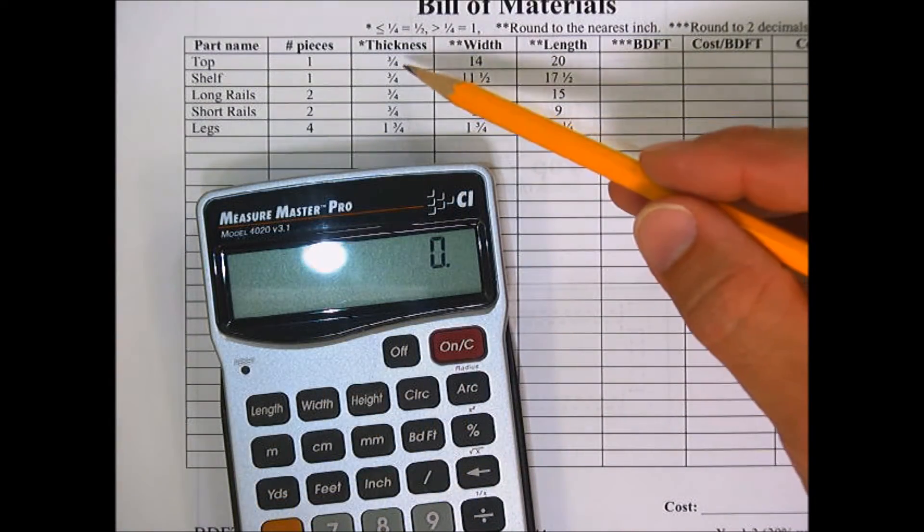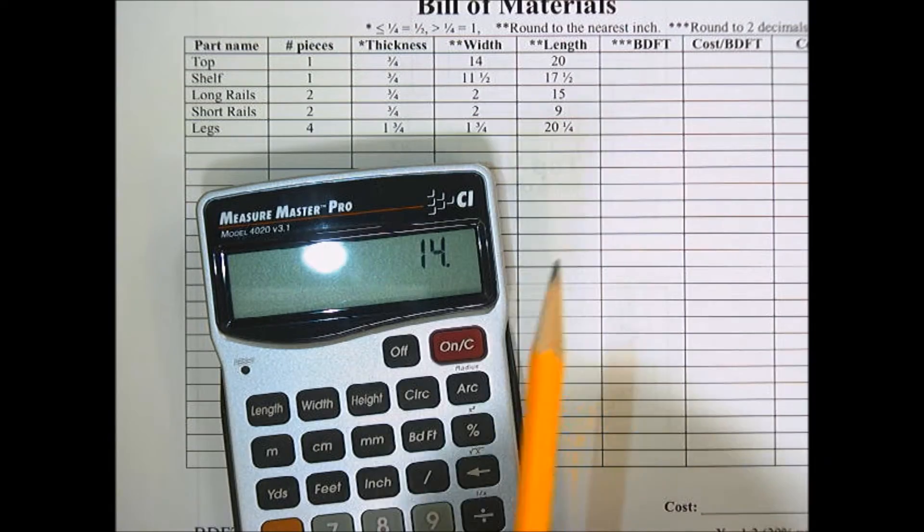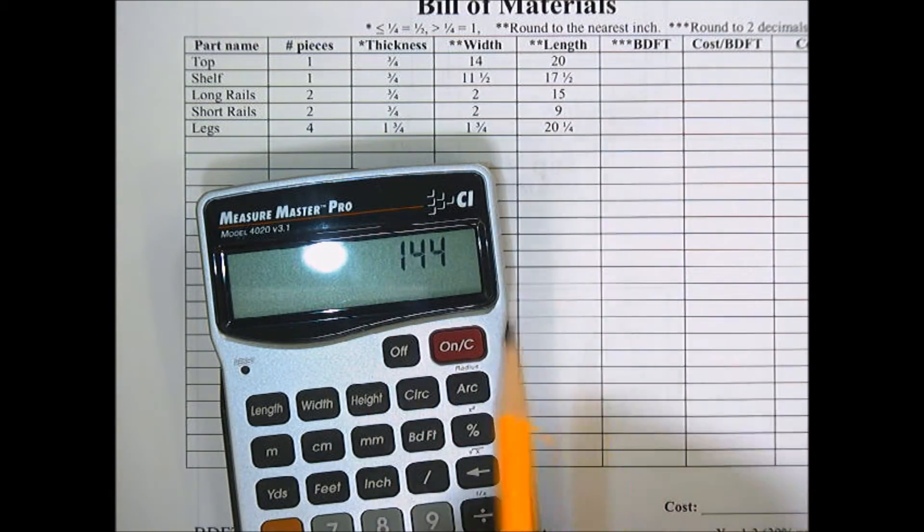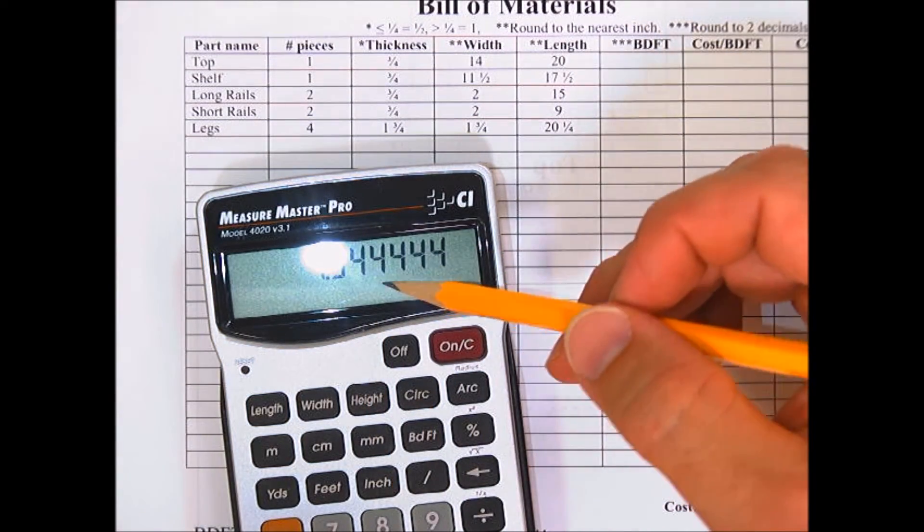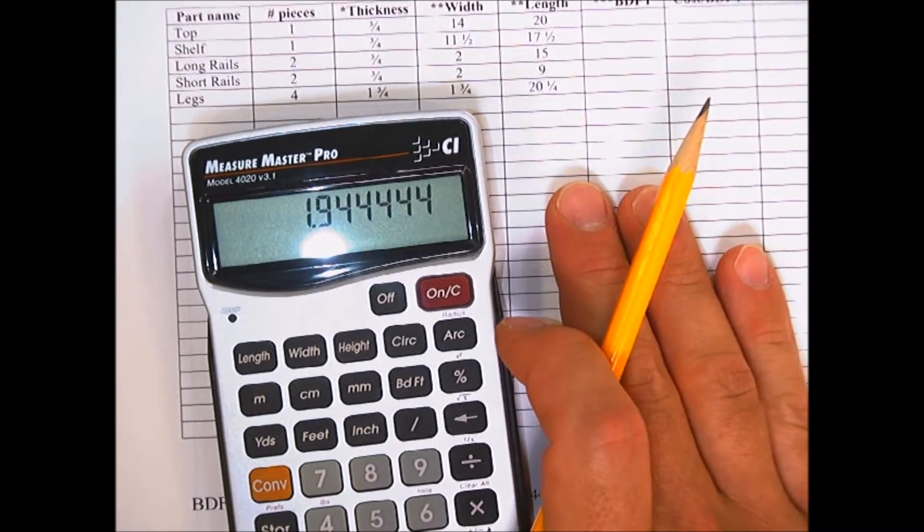So for the top, the thickness will round to one, so we can do 14 times 20 divided by 144, which gives us 1.94 repeating. We'll round down, so the answer will be 1.94.